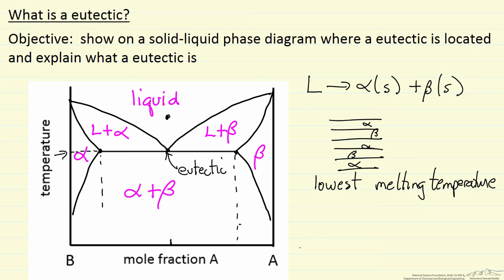So if we cool down to this point where the X is, we'd have a polycrystalline structure, and each of these crystals in the polycrystalline structure would have these layered structures. That's eutectic.